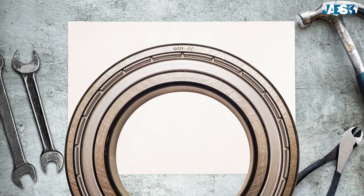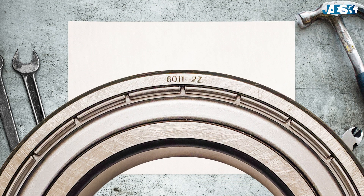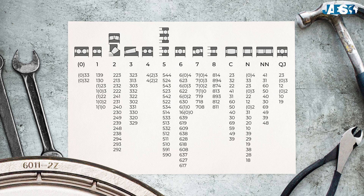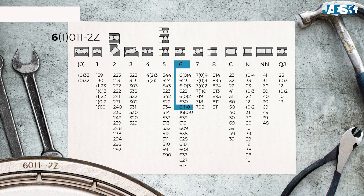On this bearing, we can read 6011-2Z. The initial number, 6, indicates a single row deep groove ball bearing — the most common type. In the legend shown here, all the numbers and letters you might encounter are detailed, allowing you to recognize the different types of bearings.